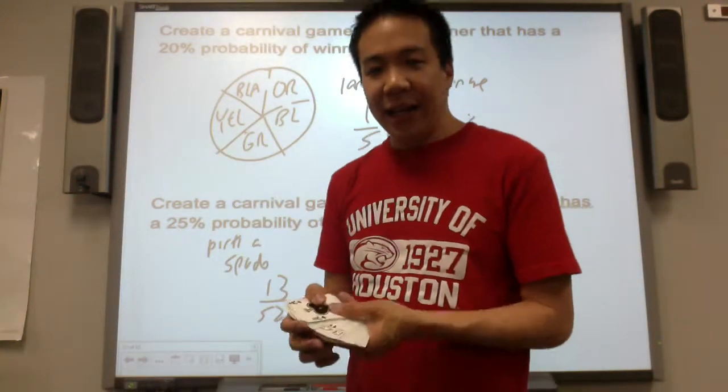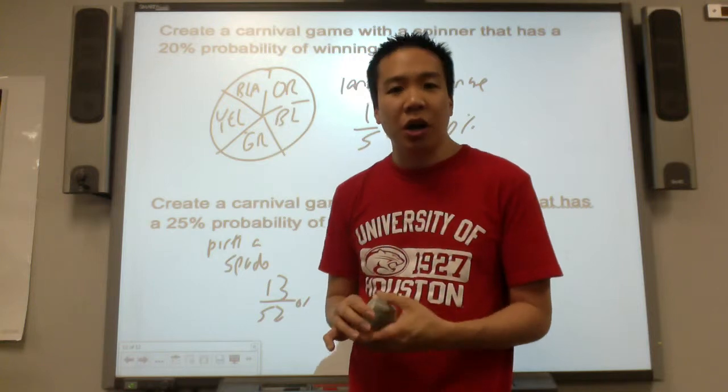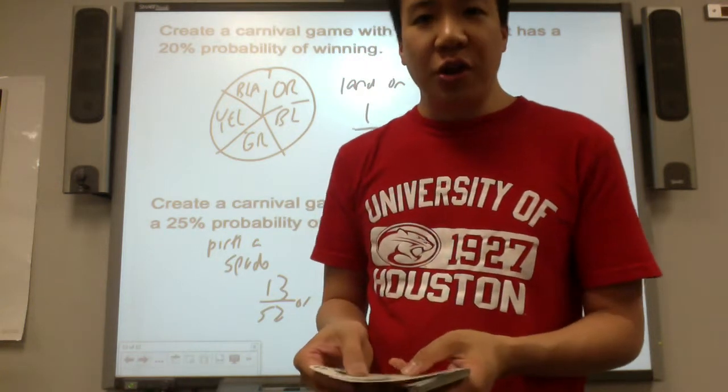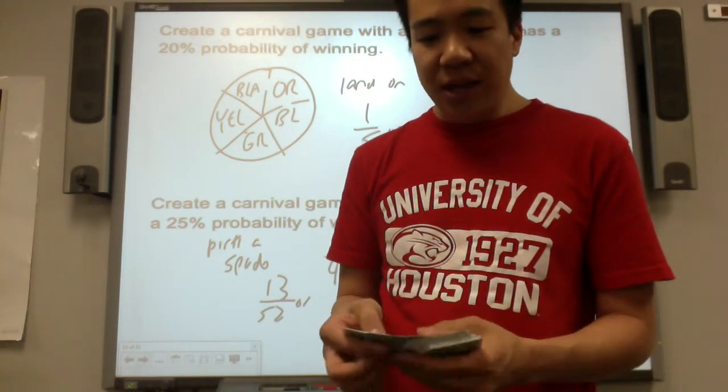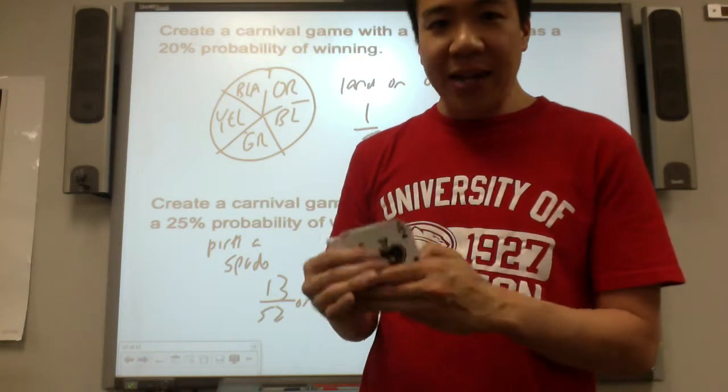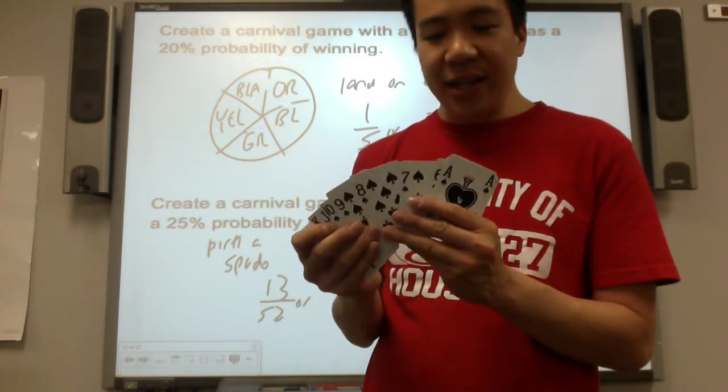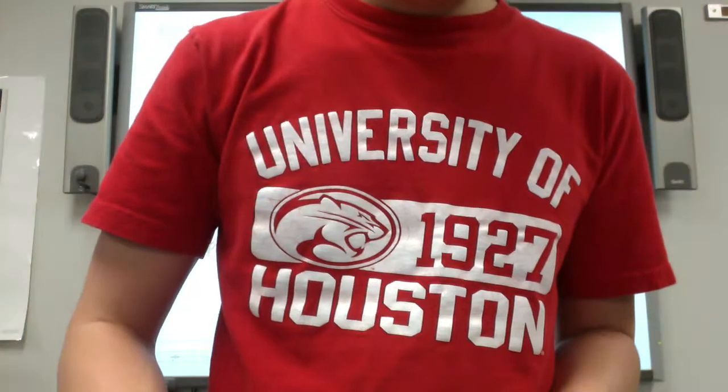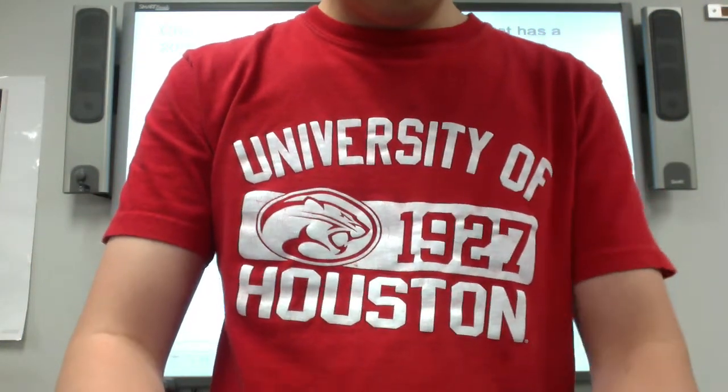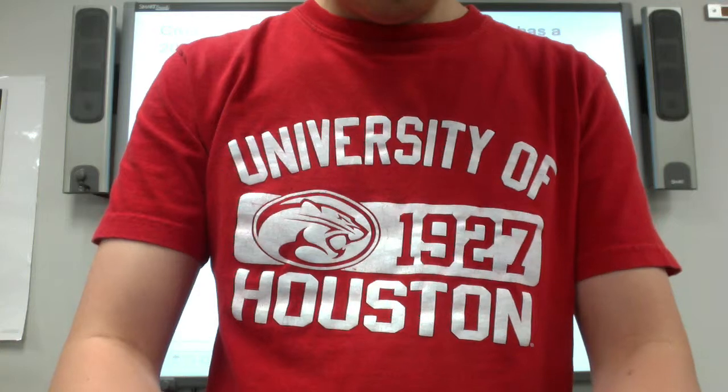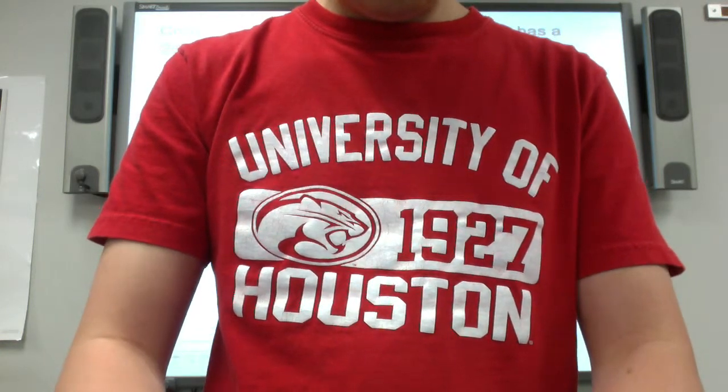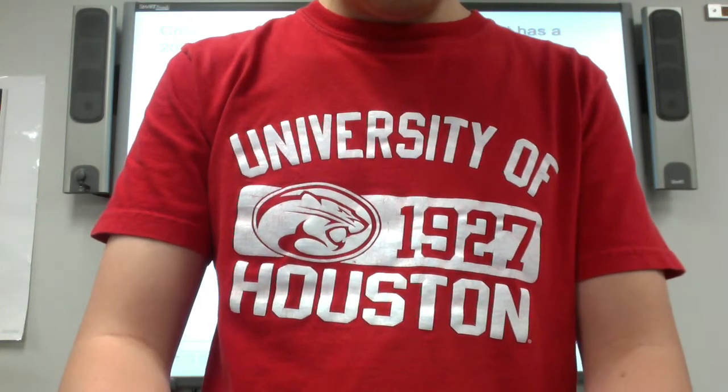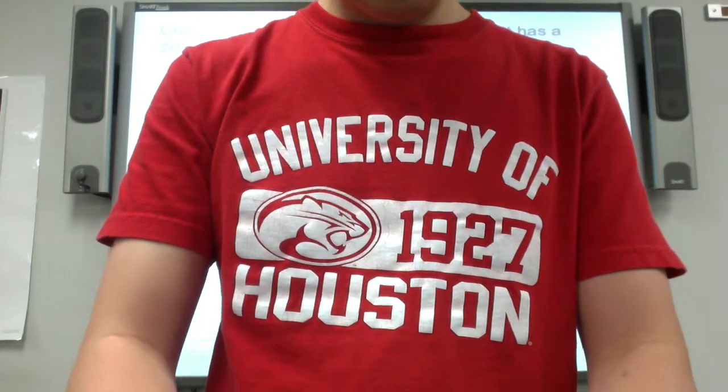All right, so again, a standard deck has 52 cards. There are four suits. There are 13 cards per suit. And it goes from ace all the way to king. Jack, queen, king are the face cards. Thank you.